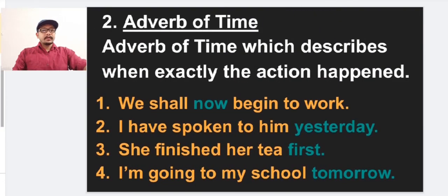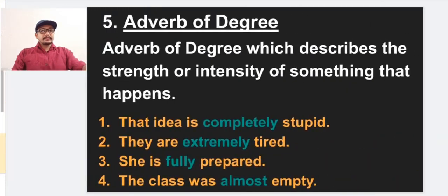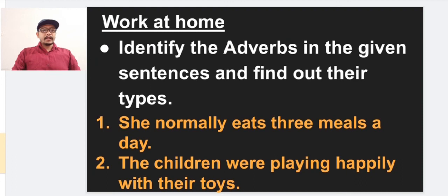So these are the five types of adverbs. Remember the tips: adverb of manner — how; adverb of time — when; adverb of place — where; adverb of frequency — how often; adverb of degree — how much. If we remember these question words, we can easily identify and categorize adverbs in sentences. Now for practice, identify the adverbs and find their types in the given sentences.